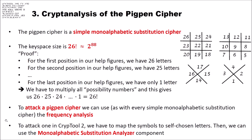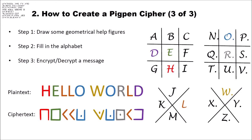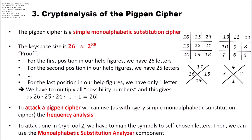Of course, you can also use CrypTool 2 to attack this. To attack a Pigpen cipher in CrypTool 2, we have to map the symbols to self-chosen letters, and then we can use the monoalphabetic substitution analyzer component. So going back to this example, let's assume we do not know this is 'Hello World' and we also do not know this construction. For the first symbol, you choose: this is an A, this is a B, this is a C, this is a D — and then you map all symbols in the ciphertext to letters you choose yourself, and use that transcription with the monoalphabetic substitution analyzer component in CrypTool 2.